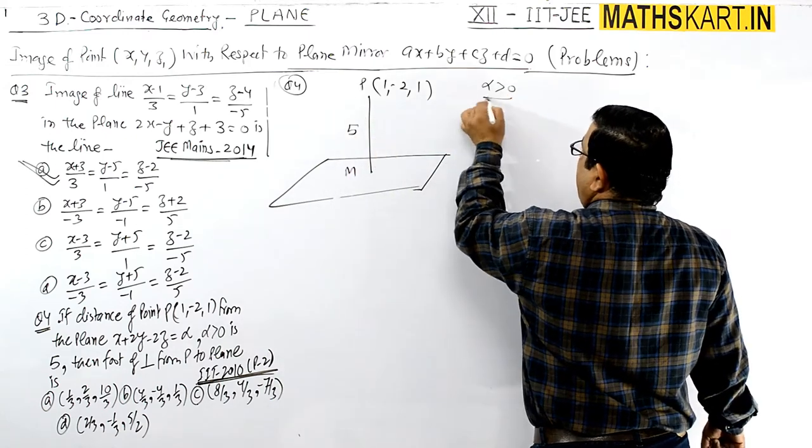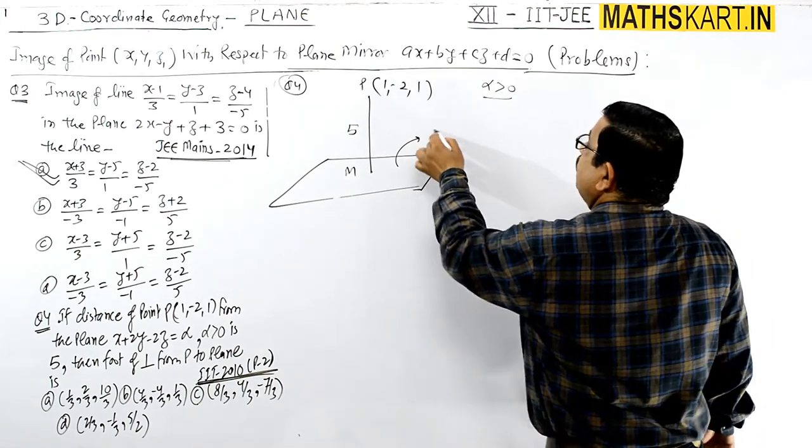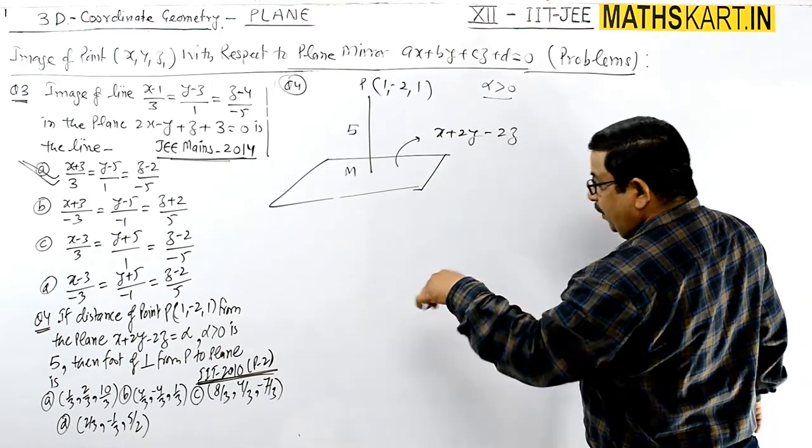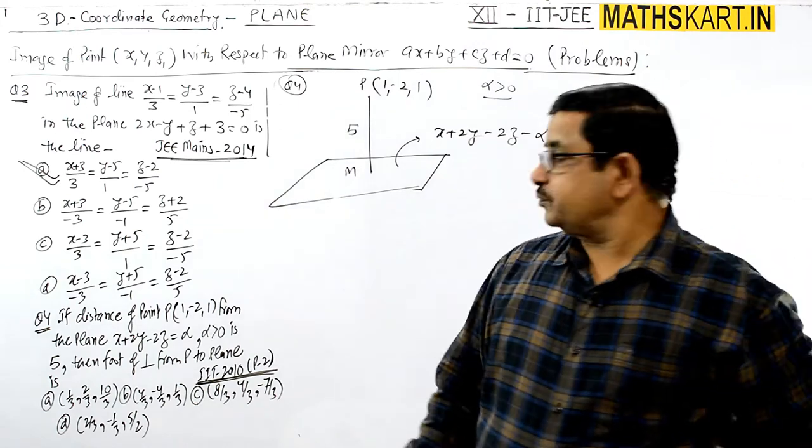The distance PM is 5 given. He says α should be positive. In the plane, what he has done is x + 2y - 2z, taking α to the other side: minus α = 0. α is unknown.